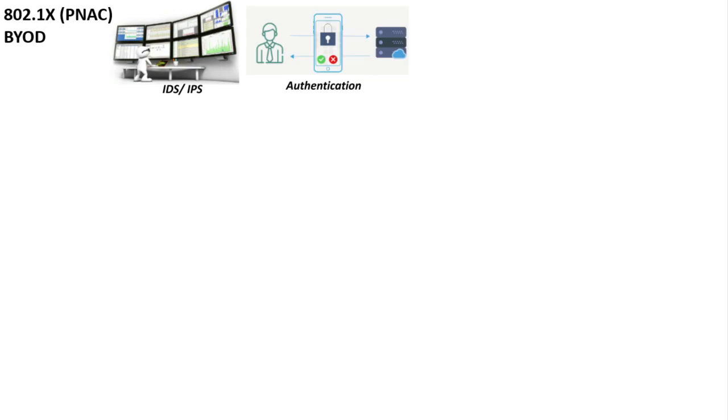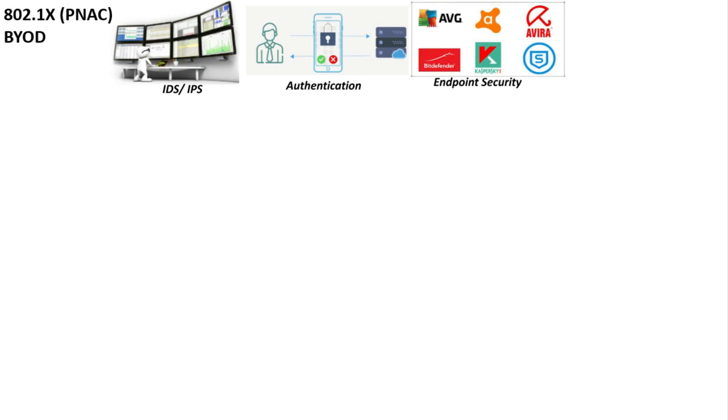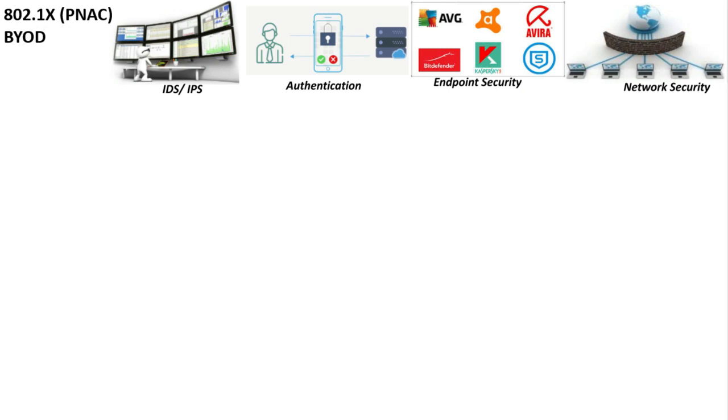Network access control encompasses four security concepts: the first is the intrusion detection system and intrusion prevention system; next is user or system authentication; next is endpoint security; and the last is network security. All these four concepts are encapsulated inside network access control.